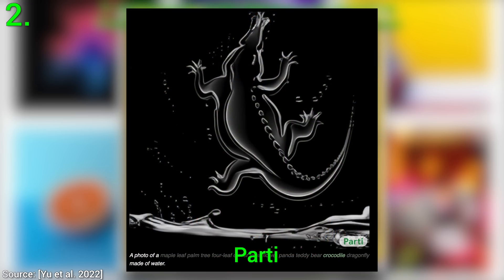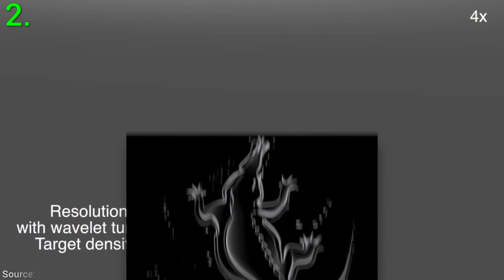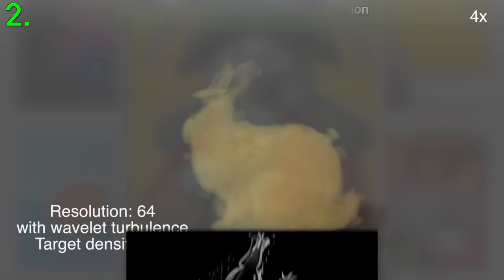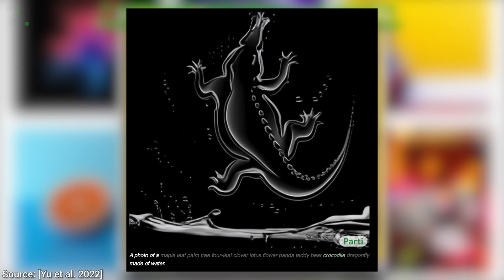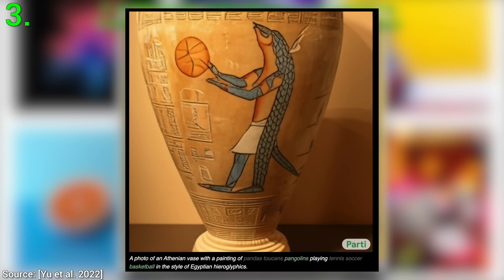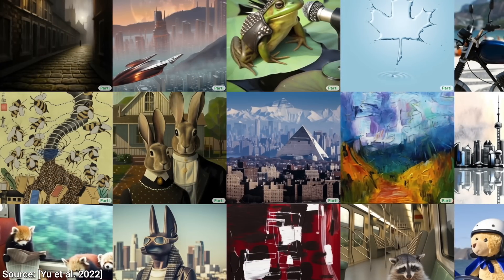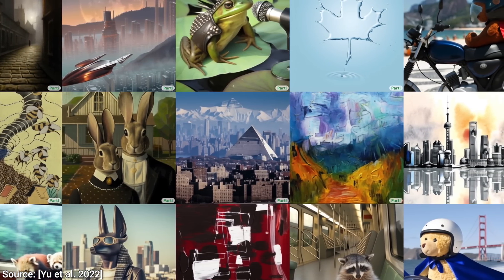Two: a crocodile made of water. As someone who has spent some time researching controlling fluid and smoke simulations, this one is highly appreciated. Three: a detailed Athenian vase with Egyptian hieroglyphics. I love how Parti was able to bring all of these concepts together into one coherent solution. This may be subjective, but if someone told me that a person made this, I would say that person is quite creative. But creativity in a machine? How cool is that?